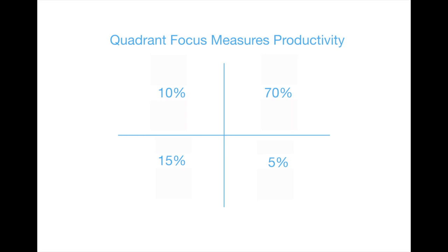When you track the percentages in the quadrant focus, you will be able to see whether you're becoming more or less proactive, which is the kernel of productivity.